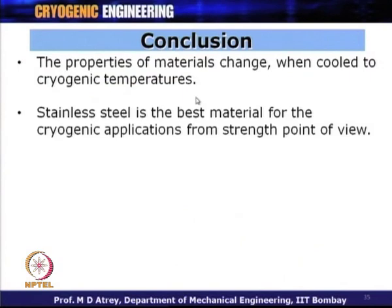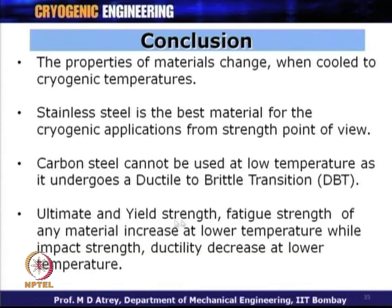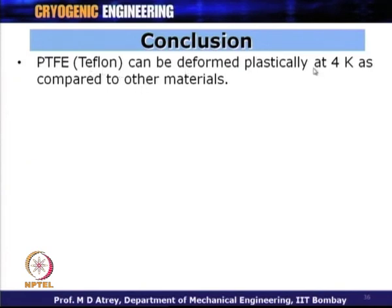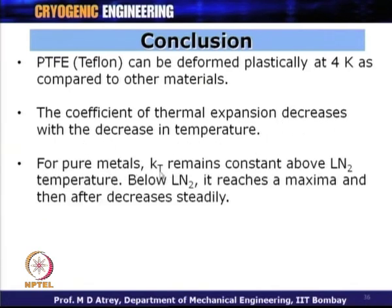In conclusion: Properties of materials change when cooled to cryogenic temperatures. Stainless steel is the best material for cryogenic applications from a strength point of view. Carbon steel cannot be used at low temperature as it undergoes DBT (ductile-to-brittle) transition. Ultimate strength, yield strength, and fatigue strength increase at low temperature, while impact strength and ductility decrease. PTFE (Teflon) can be deformed plastically at 4 Kelvin and is preferred in cryogenics. The coefficient of thermal expansion decreases with decrease in temperature. For pure metals, thermal conductivity remains constant above LN2 temperature (77 K), then reaches a maximum and decreases.